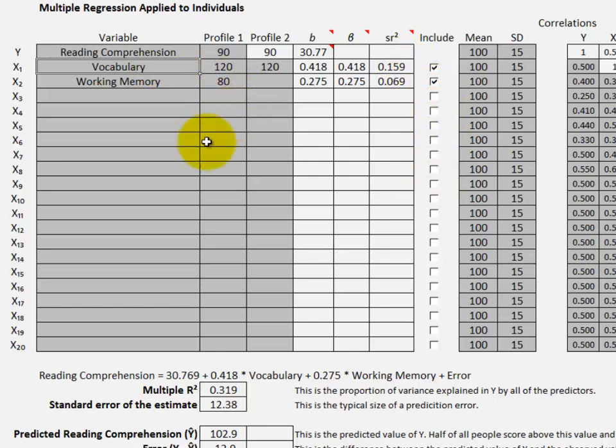With two predictors, we can see that the multiple R-square is larger and the standard error of the estimate is a little bit smaller.